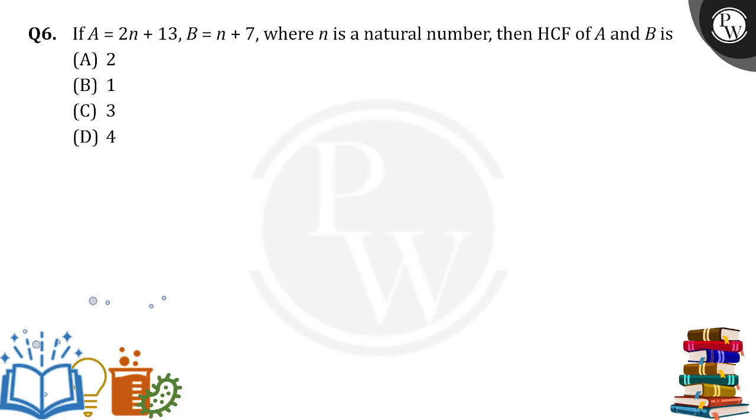So everyone, if A is equal to 2n plus 13, B is equal to n plus 7, where n is a natural number, then find the HCF of A and B.